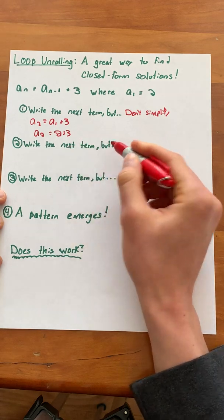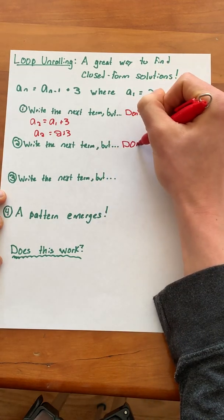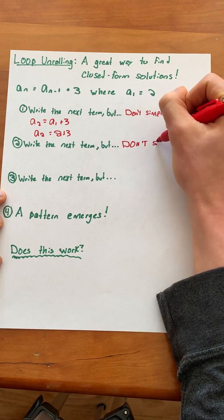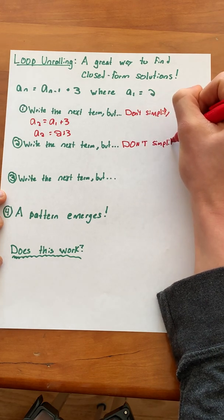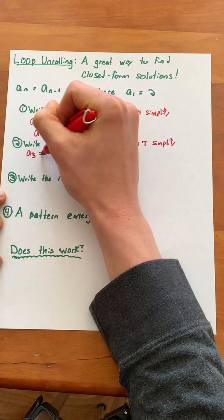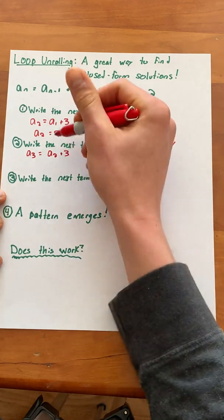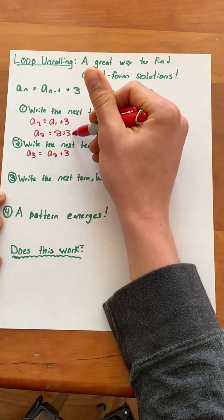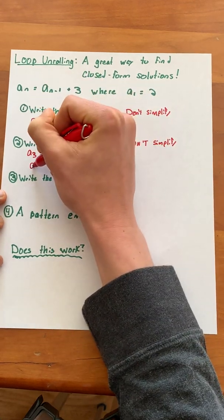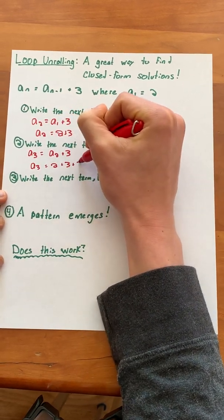Now we want to again write the next term but again don't simplify. So we end up getting that a of 3 equals a of 2 plus 3. We note that we already solved for a of 2 up here so we're just going to plug it back in. a of 3 equals 2 plus 3 plus 3.